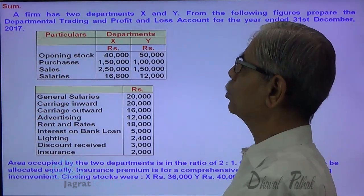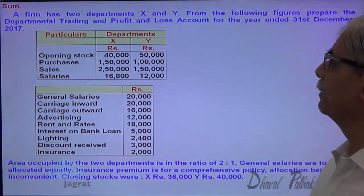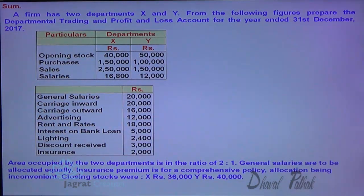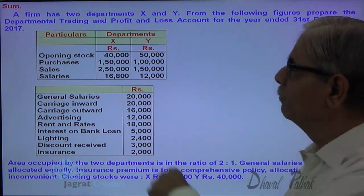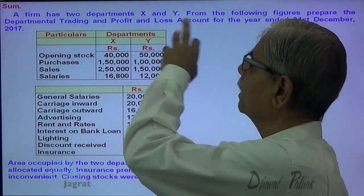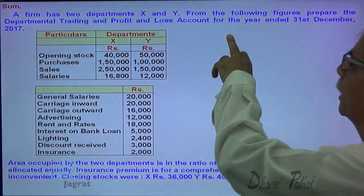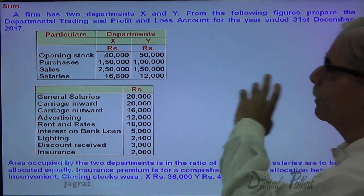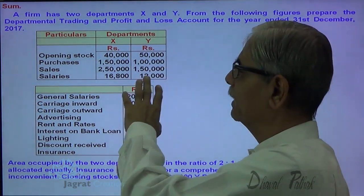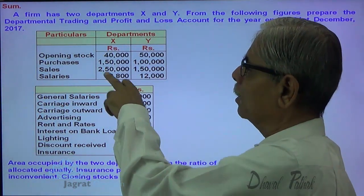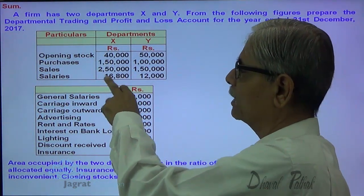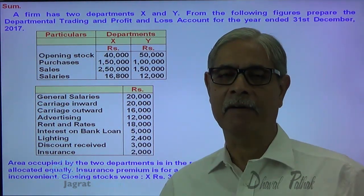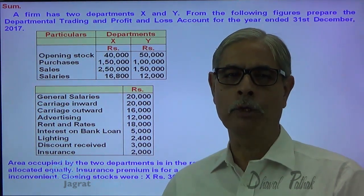A firm has two departments X and Y. From the following figures, prepare departmental trading and profit and loss account for the year ended 31st December 2017. Opening stock, purchases, sales, and salaries of department X and Y are given.